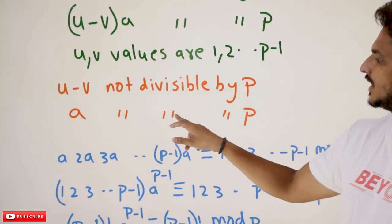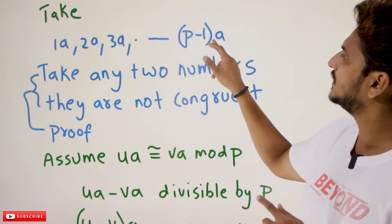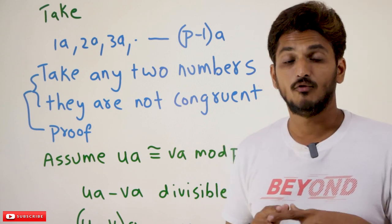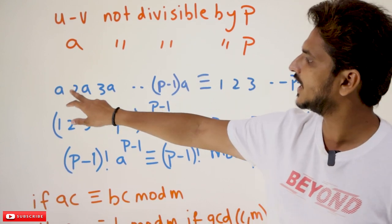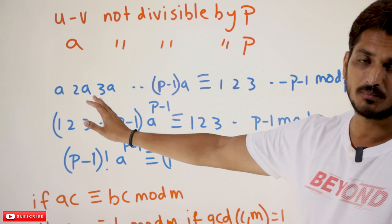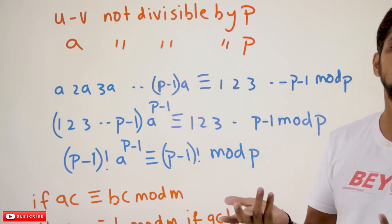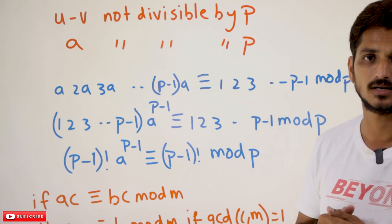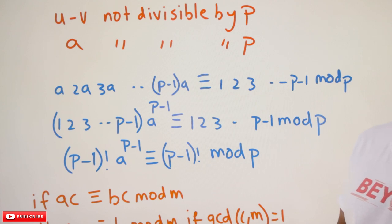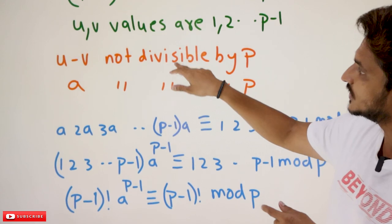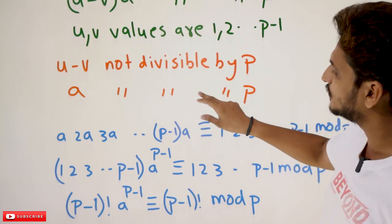Since u − v is not divisible by p and a is not divisible by p, therefore 1a, 2a, 3a, and so on up to (p-1)a are not congruent. Whenever you take numbers that are not congruent, you are taking numbers from different classes. So from this, we can write: a × 2a × 3a × ... × (p-1)a is congruent to 1 × 2 × 3 × ... × (p-1) (mod p), because this modulus p and this modulus p are the same. From the second statement we observed above, that is why this is congruent to 1 × 2 × 3 × ... × (p-1) mod p. Because we have proved that we are taking numbers that belong to different classes — not congruent numbers.